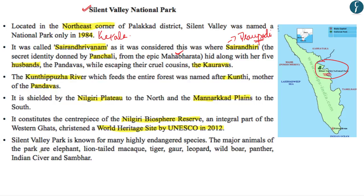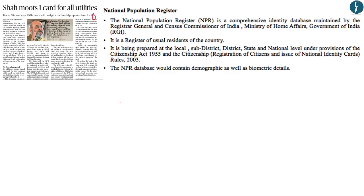The major animals found in this park are elephant, lion-tailed macaque, tiger, leopard, wild boar, panther, Indian bison, and sambar. Please remember that it is located in the state of Kerala and is a part of the Nilgiri Biosphere Reserve. With this let's move on to our next news.